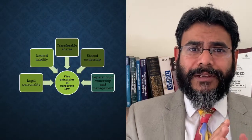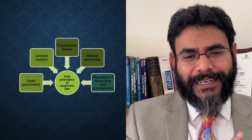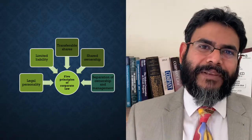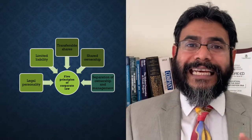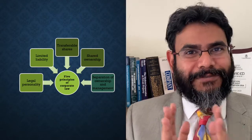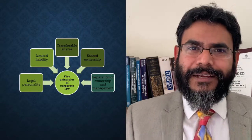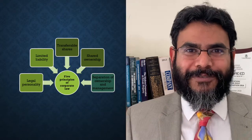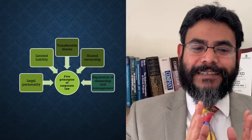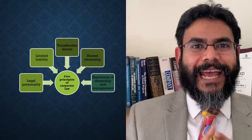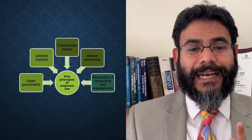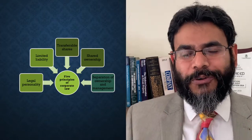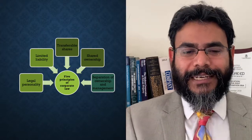There are five basic principles of corporate law, and if you can understand these five, you should be able to derive or work out all the other underlying principles or logic or philosophy behind company law. These five principles can be divided into three categories. Out of these five, there are two sets of two principles that must go hand in hand, and there is a fifth one that is pretty much standalone. The first pair is legal personality or separate legal entity and limited liability. The other pair is shared ownership and transferable shares. And the odd one out is the separation of ownership and management.